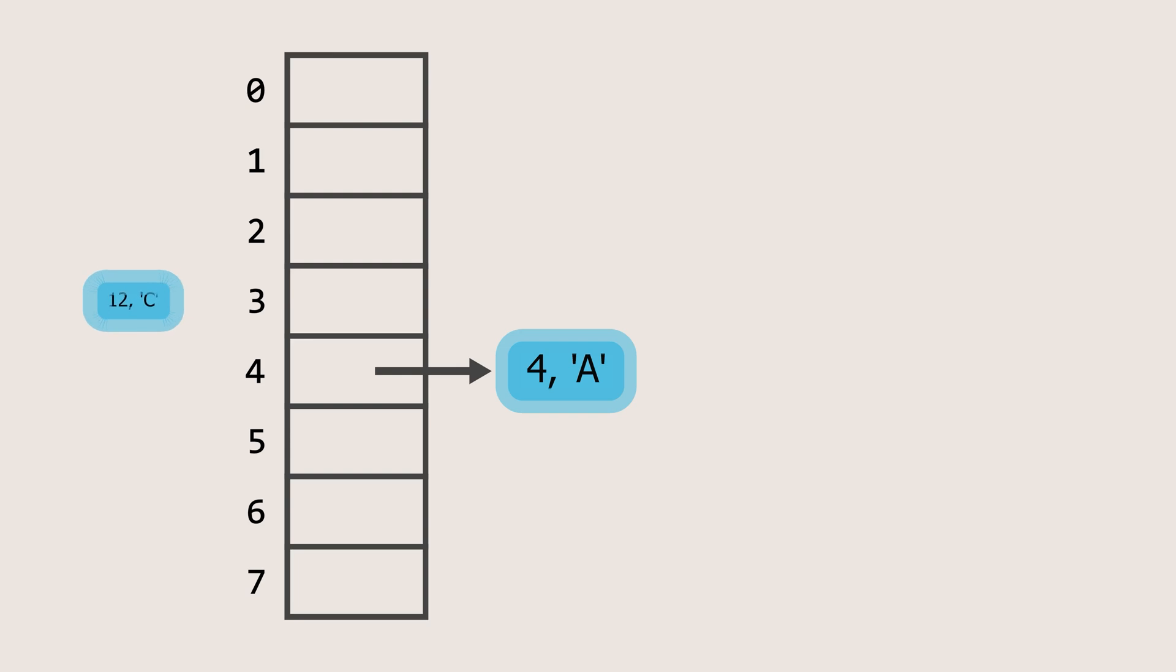Now, if we store another element with the key 12, the hash output would again be 4, resulting in a collision. To handle this, we add the new element to the end of the linked list at index 4. If you're unfamiliar with how a linked list works, you might want to check out our video on linked lists. The link is in the description box below. Other elements will be inserted similarly, creating a new linked list at each index. When a collision occurs, the element is appended to the end of the linked list at that index.